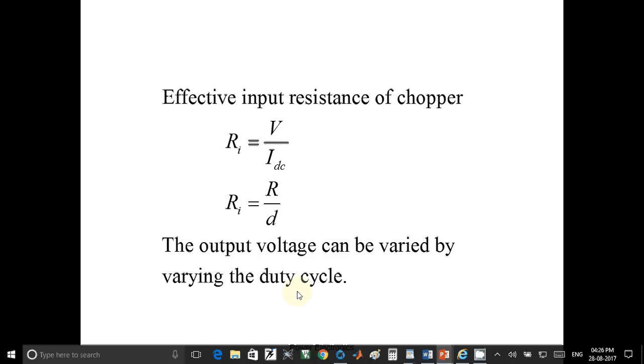Effective input resistance of chopper is denoted by Ri equals V upon Idc. So Ri equals R upon D. The output voltage can be varied by varying the duty cycle. This is the end of step down chopper.